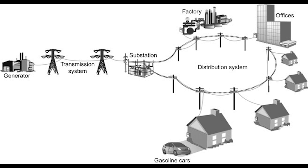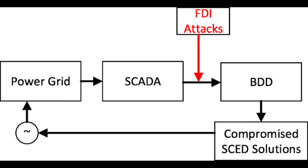Local controllers in distributed control, on the other hand, have access to both local and neighbor information, making them vulnerable to cyber attack. By launching FDI attacks, a malicious entity could disrupt data exchange between neighboring local controllers.